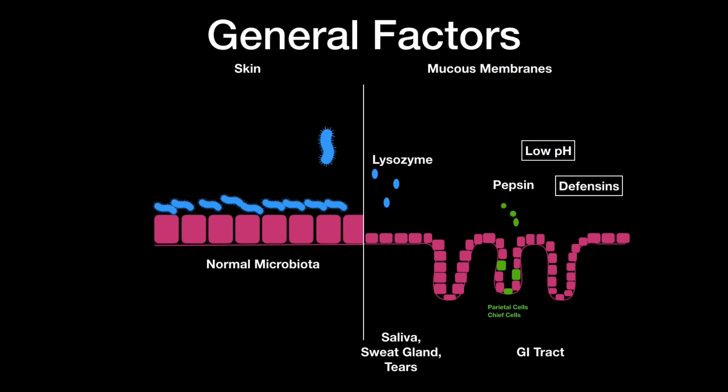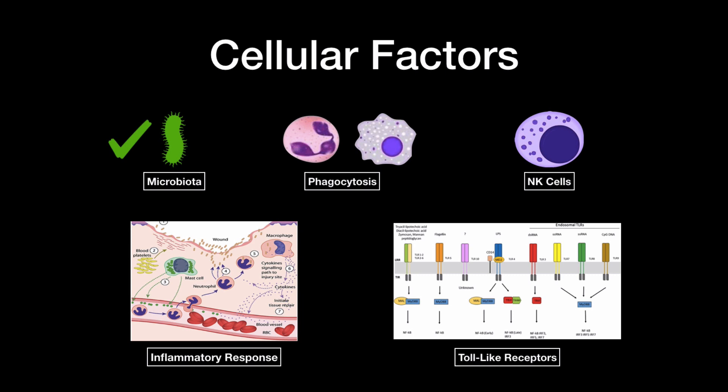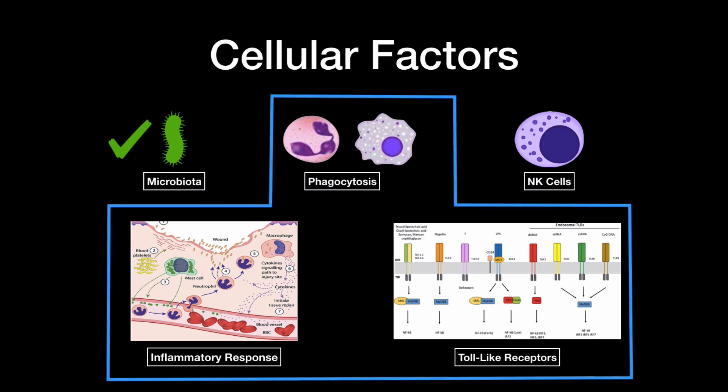That's mainly the general factors I wanted to talk about. From the cellular factors, we've already talked about the microbiota limiting the pathogenic bacteria from growing. In my next video, we will look at what toll-like receptors are and how phagocytosis happens in detail, and the steps in inflammation. Natural killer cells have a cytotoxic mechanism, and I feel like it's more logical to talk about that later when I discuss the cellular immune response, as it fits more there.